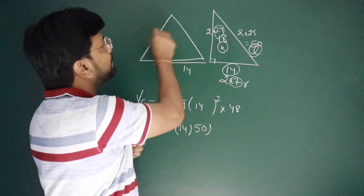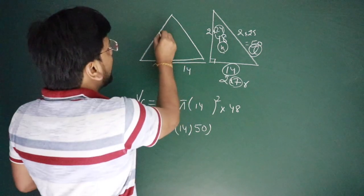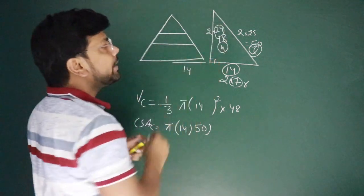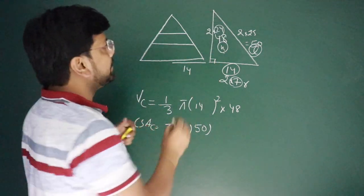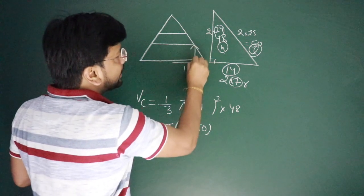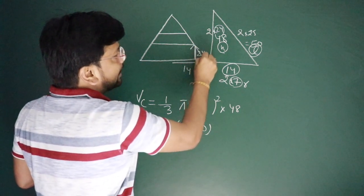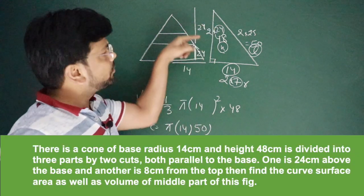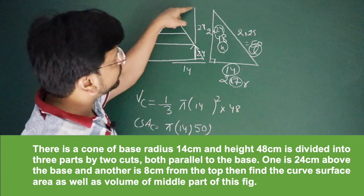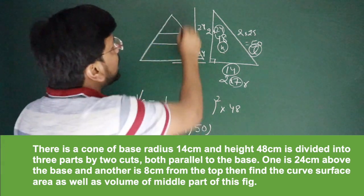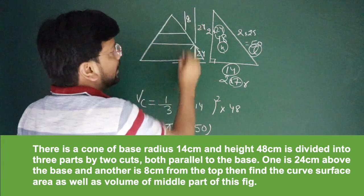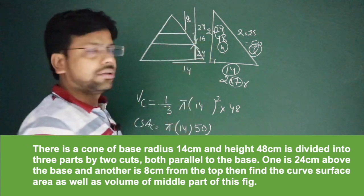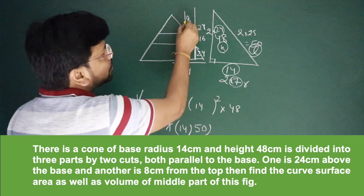Now we need to find the middle portion that is cut. We'll use Thales' theorem. It's cut by two parallel lines. Total height is 48 cm. The first cut is at 24 cm from the base, so this height is 24. And the top portion is also 24. The second cut is 8 cm from top, so if this is 24, then this middle portion is 16.